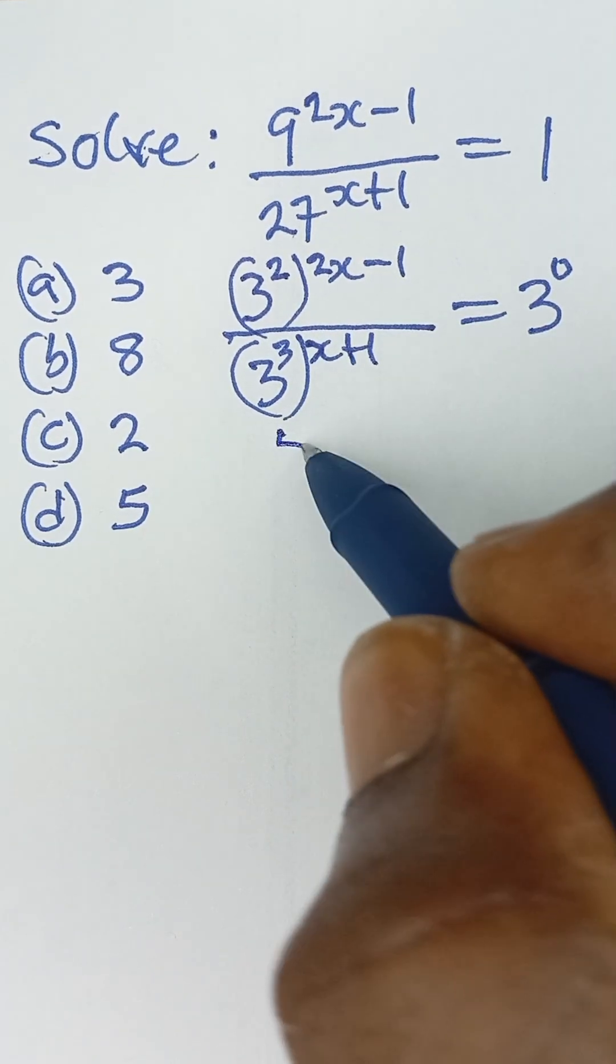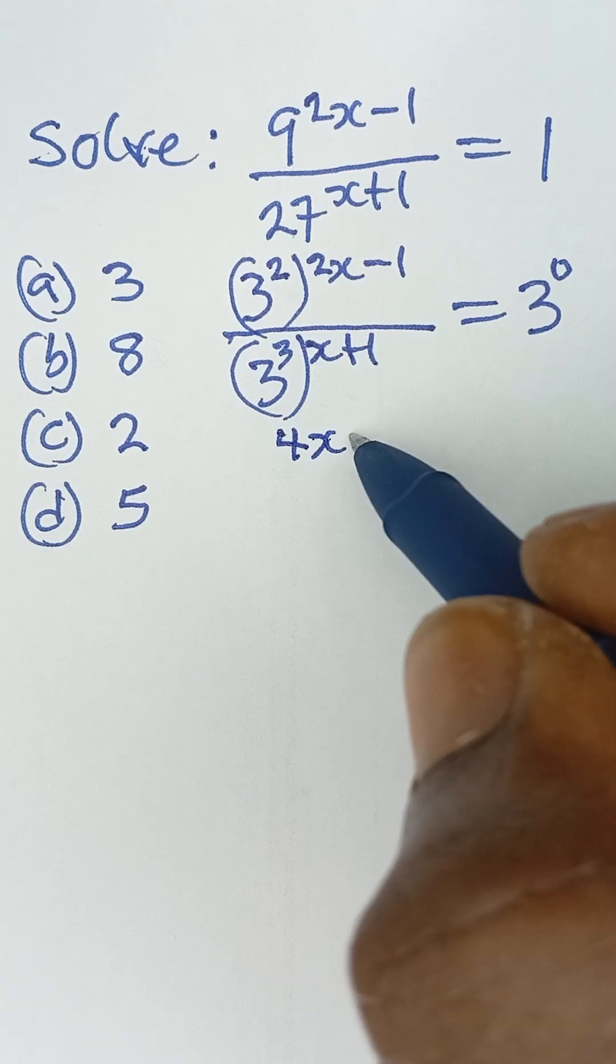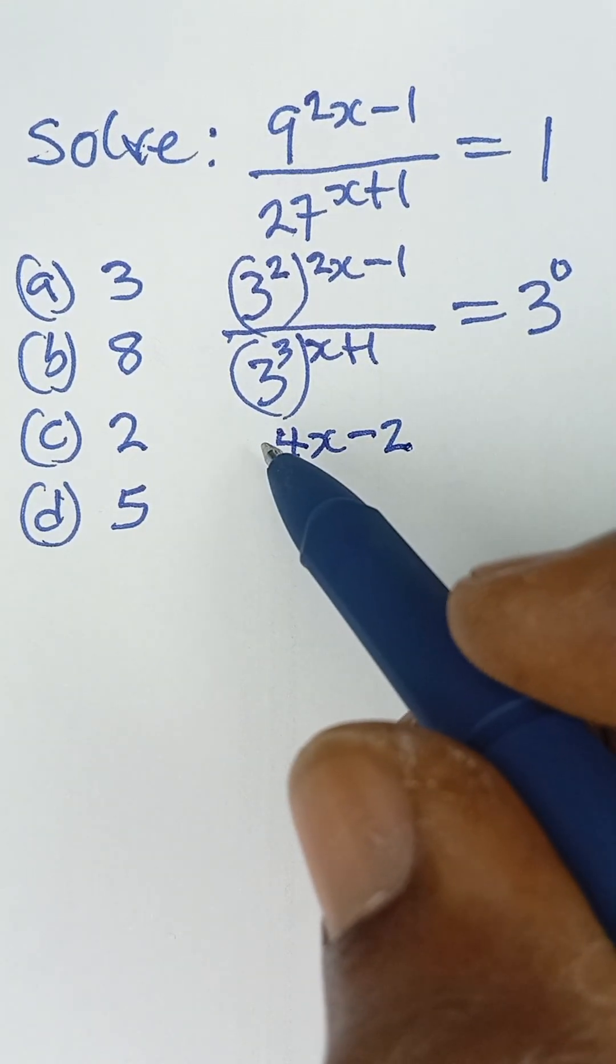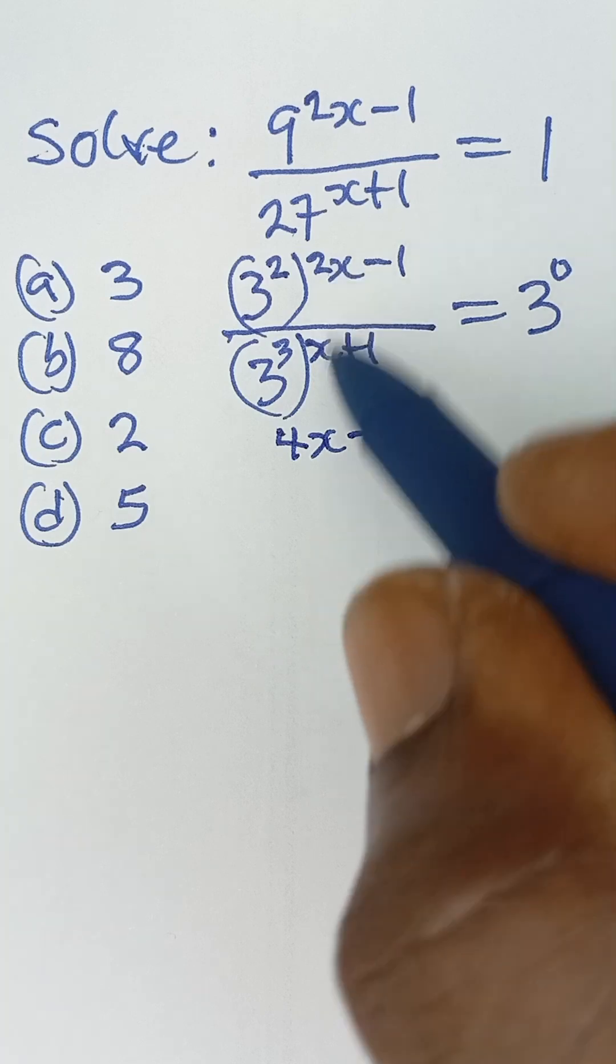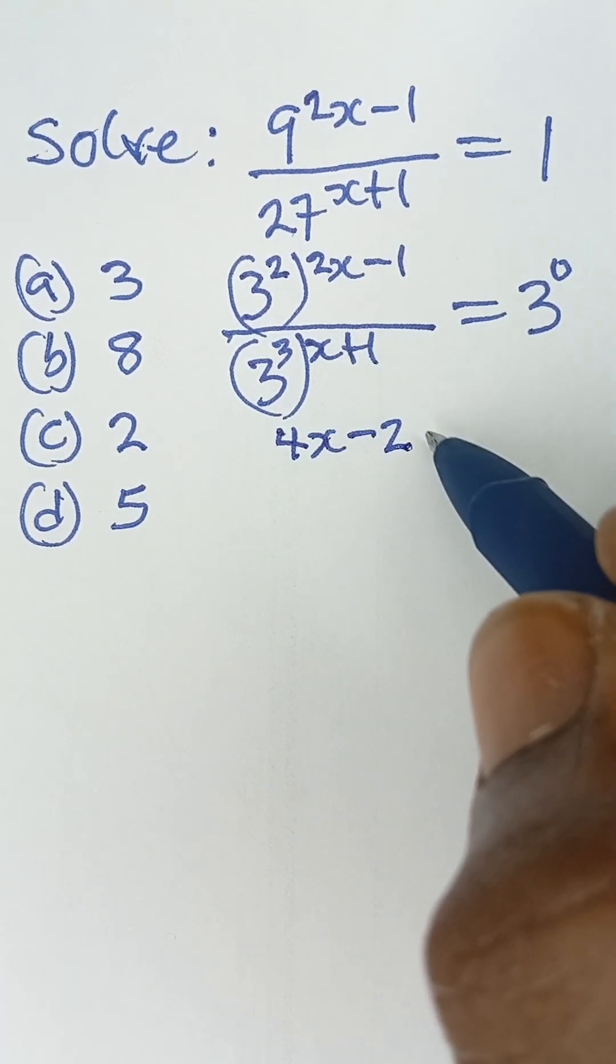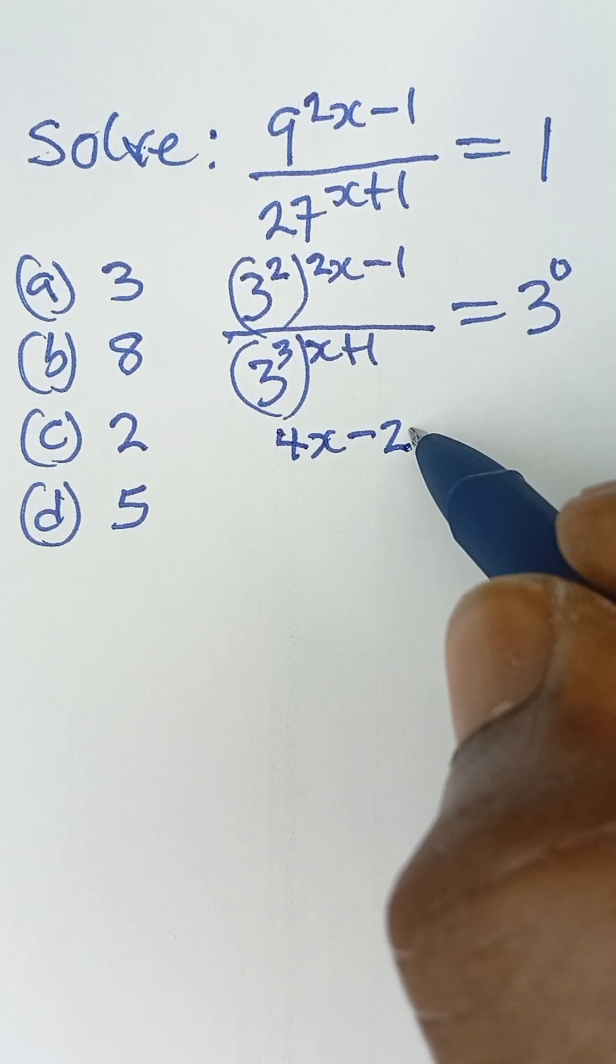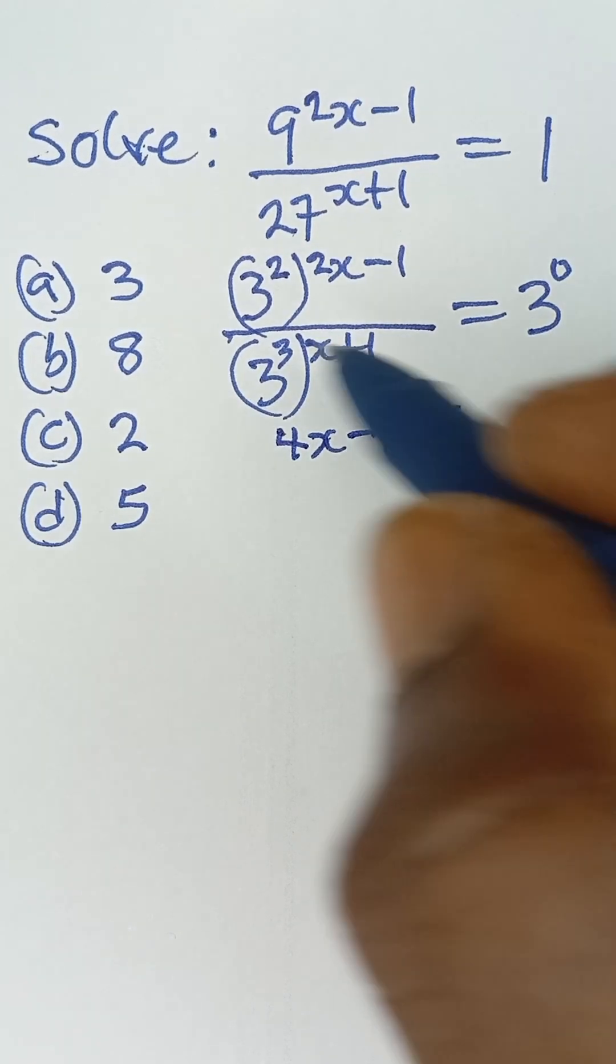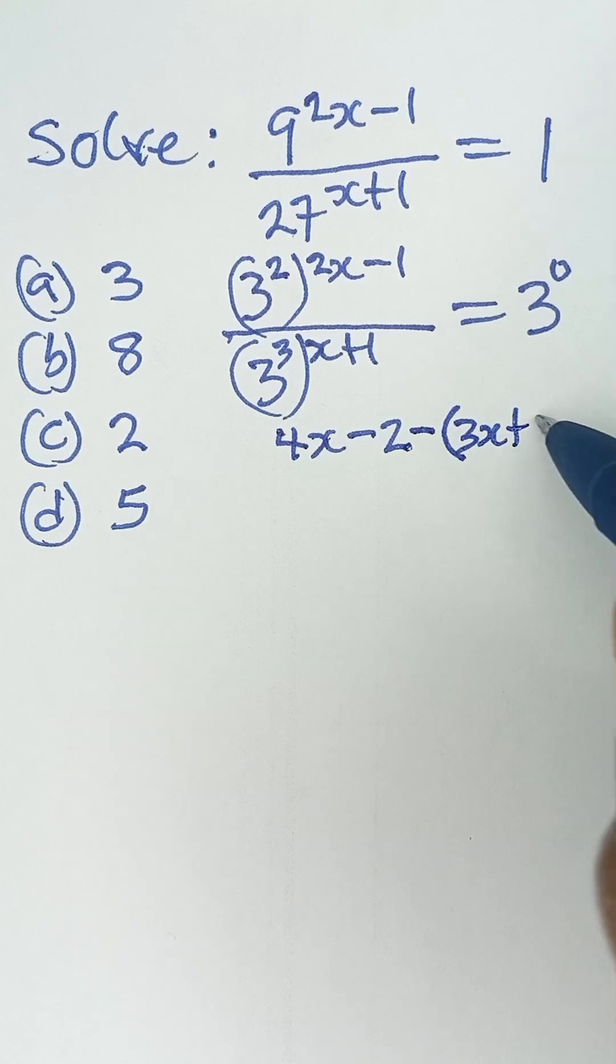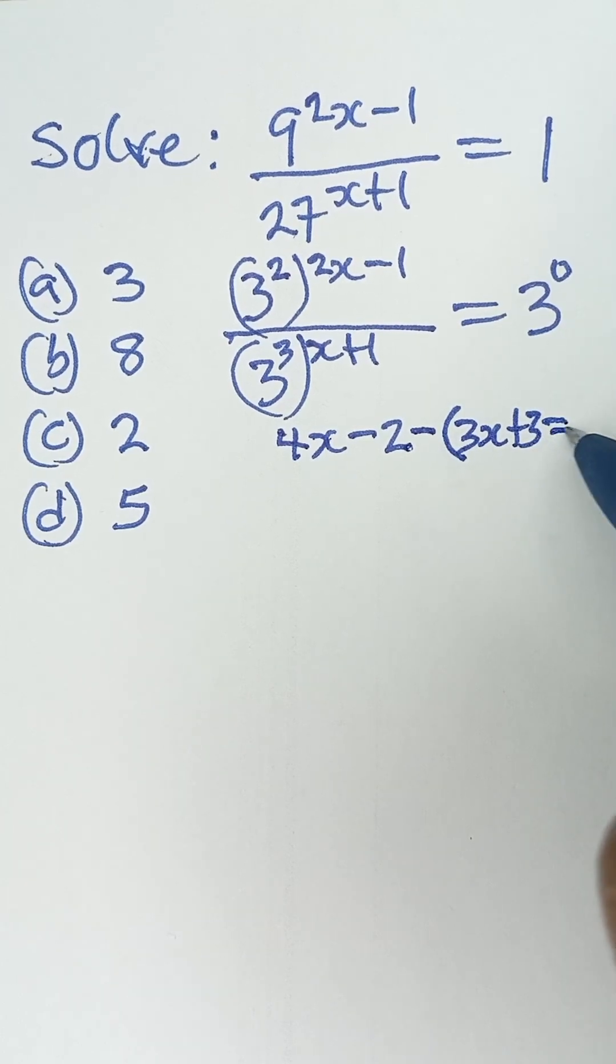We get us 4x minus 2, and then because in indices we have division, what we do to powers, we simply subtract the powers. So we say minus this, multiply the power here, which is 3x plus 3, and that should be equal to